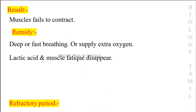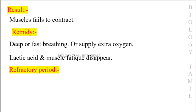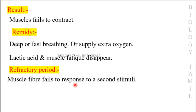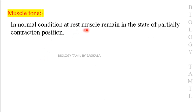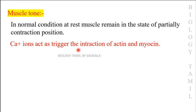The refractory period is when a muscle fiber fails to respond to a second stimulus. In normal conditions, resting muscles remain in a state of partial contraction — that is muscle tone. Calcium ions act as a trigger for the interaction of actin and myosin in muscle tone.